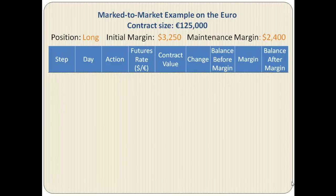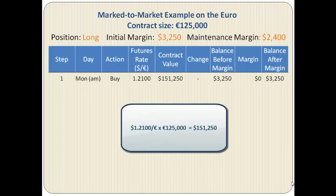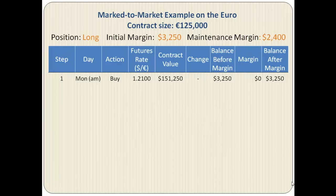Here we are going to track the daily activity of the margin account. In step one, Monday morning, the speculator buys a futures contract at 1.2100. Therefore the contract value is $151,250 — we get this amount by multiplying the futures rate by the contract size of 125,000 euros. There is no change from the previous position margin because the buyer just entered into the contract, and the balance is $3,250, which is the initial margin.